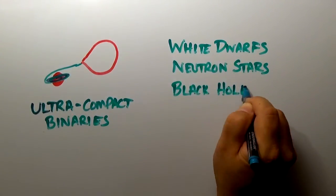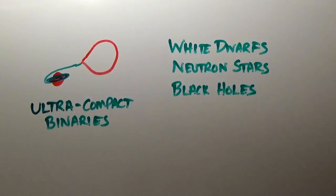LISA will see these systems hundreds or thousands of years before they merge, when LIGO will be sensitive to them. In this way LIGO and LISA give us complementary views of the cosmos.